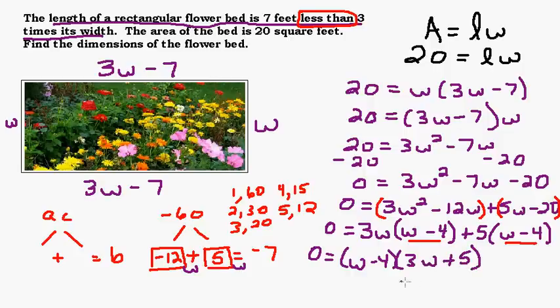Okay, we're almost there. Now that we have it factored, we need to set each factor equal to 0. If two things multiply together to be 0, then one of them has to be 0. So either w minus 4 would have to be 0, or 3w plus 5 would have to be 0.